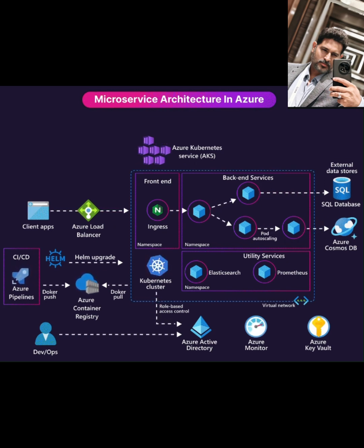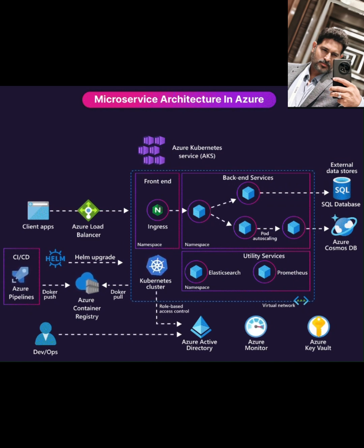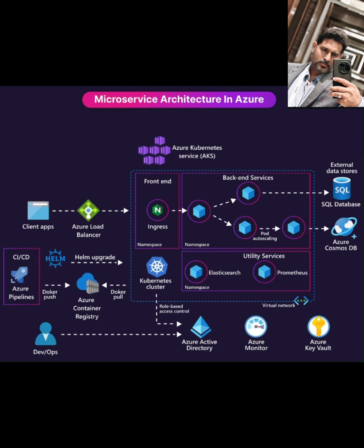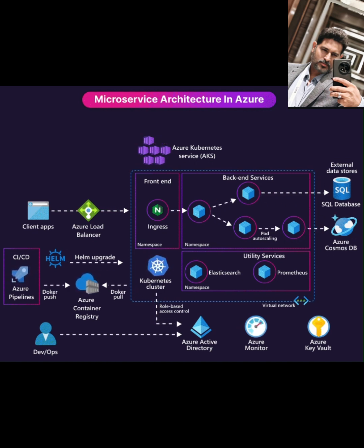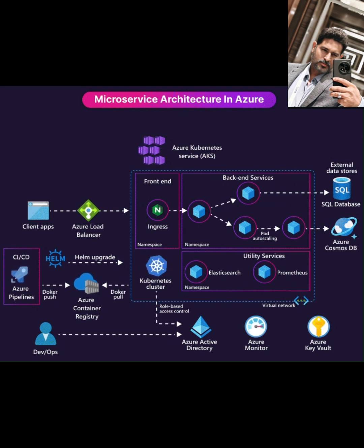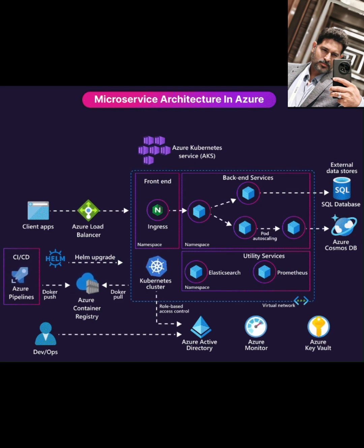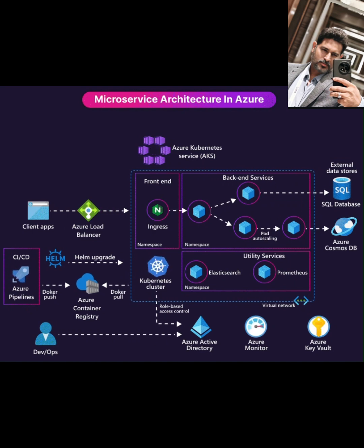Within the Kubernetes cluster, you'll deploy your microservices. The diagram shows them often organized into namespaces — logical groupings like front-end services, back-end services, and utility services, things like Elasticsearch or Prometheus for monitoring, as shown here. Each service runs as one or more pods, which are the smallest deployable units in Kubernetes, containing your containers. Kubernetes handles things like pod auto-scaling to adjust based on load. Microservices themselves are often stateless, but they need to store data. For stateful operations, they'll connect to external data stores.